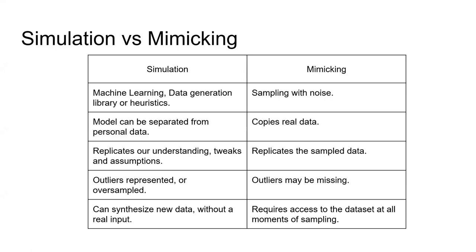In simulation, we could add our own logic or intentionally not process explicitly personal data, whereas mimicking will simply sample entire rows and may add noise. Simulation is much more technical — it requires us to really understand the problem to simulate realistic data. Simulation can also happen at a huge scale and we can even intentionally over-represent our outliers through methods such as oversampling. In mimicking, on the other hand, we could statistically just miss outliers entirely. And finally, a simulation can exist on its own without the original database, whereas mimicking is really coupled with that data set itself.